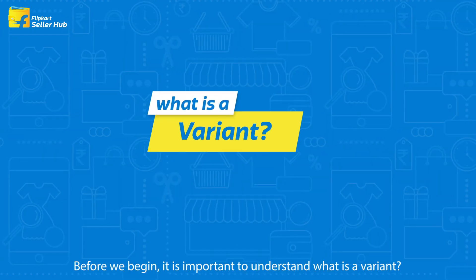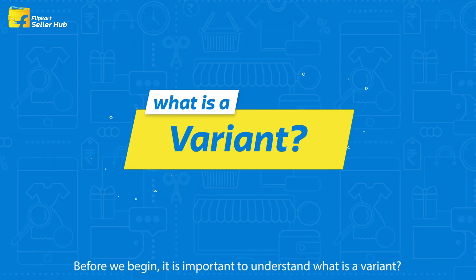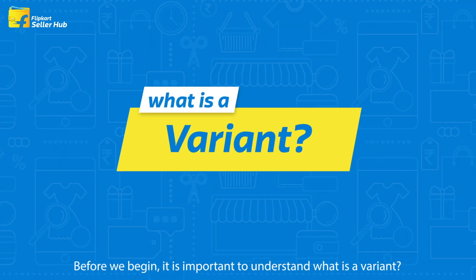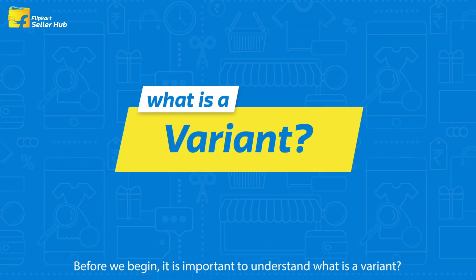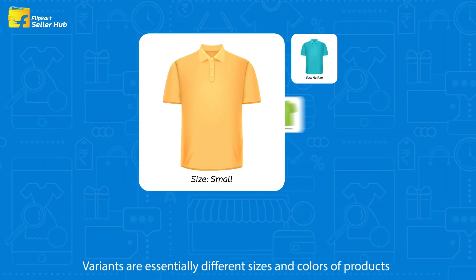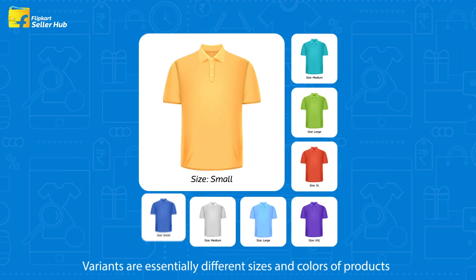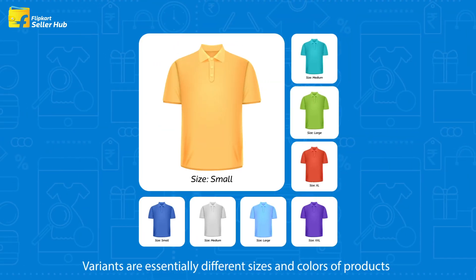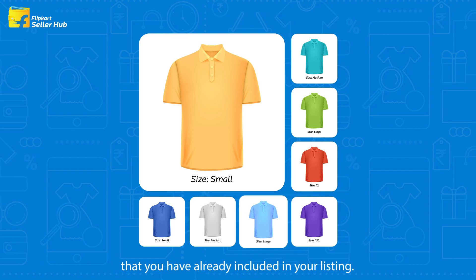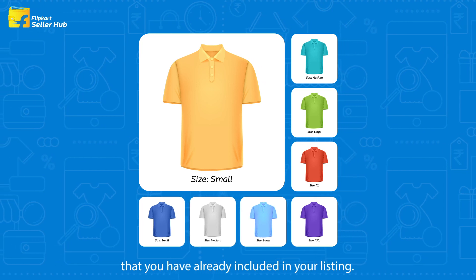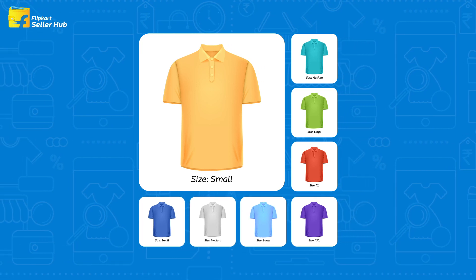Before we begin, it is important to understand what a variant is. Variants are essentially different sizes and colors of products that you have already included in your listing.